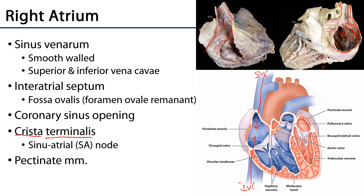Following the crista terminalis to its superior most point, just underneath the epicardium, we can encounter a cluster of very specialized cardiomyocytes called the sinoatrial or SA node. This is the pacemaker region for the heart. One item we can just barely see in the photograph is the interatrial septum — that is the wall between the right and the left atria.